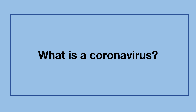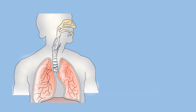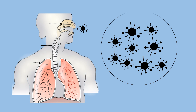So what is a coronavirus? Coronaviruses are associated with the common cold in patients. It affects the respiratory system, primarily the nose, the throat, and the lungs. It enters through the nose and mouth. Like all viruses, it uses your body's own cells to multiply.